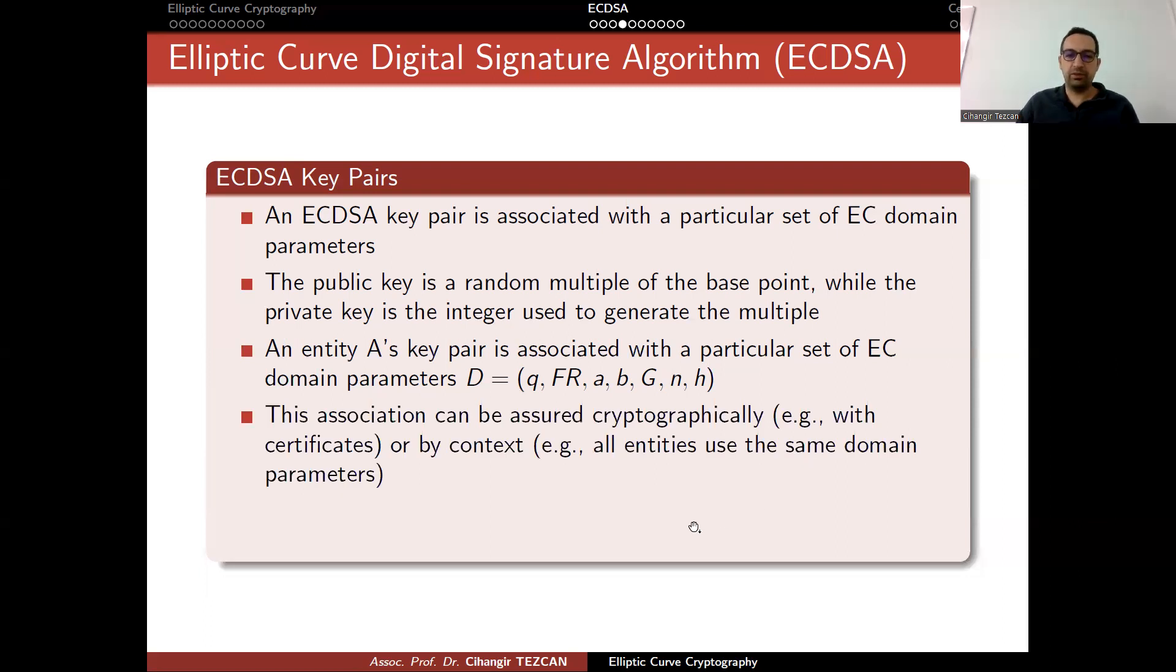This association can be assured cryptographically, for example, with certificates or by context. For example, all entities use the same domain parameters. In the case of cryptocurrencies, this is the case. We fix the elliptic curve, domain parameters, and then we use it. The entity A must have the assurance that the domain parameters are valid prior to key generation.